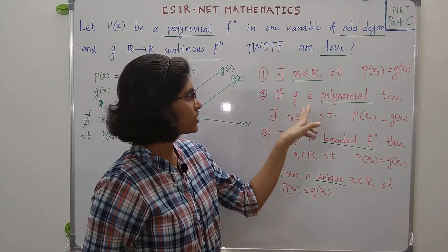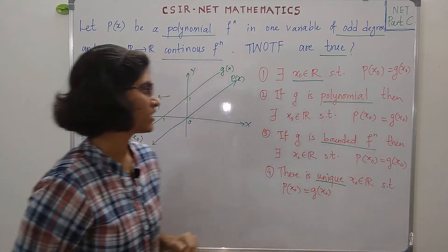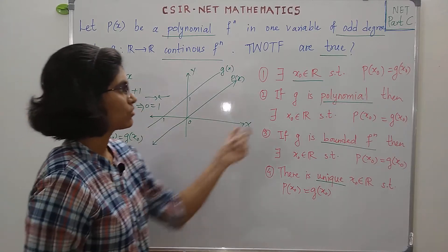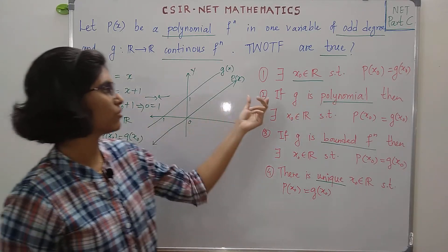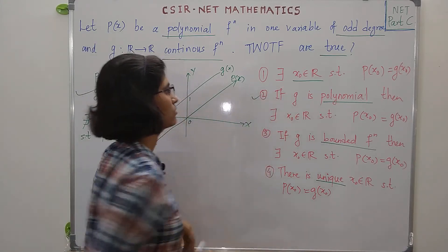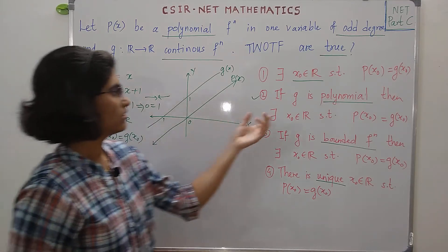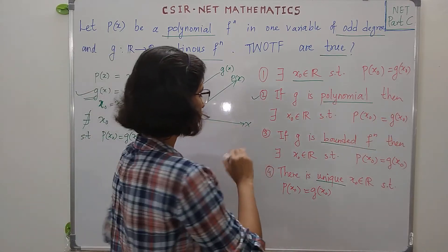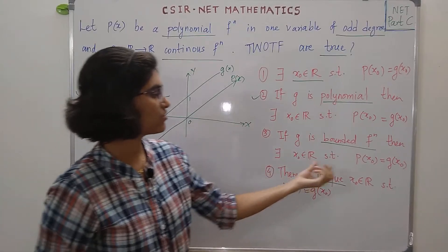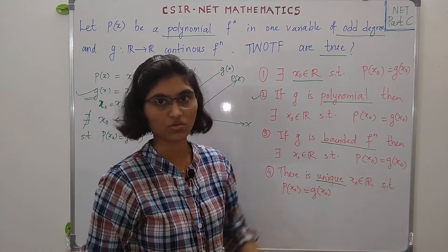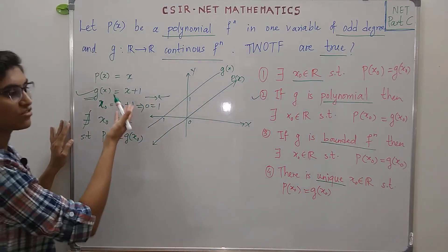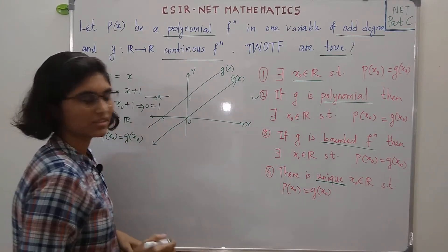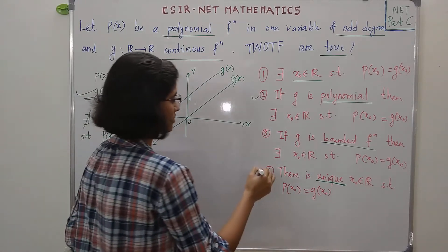The second option says G is a polynomial. Note that this G(x) = x + 1 is again a polynomial of degree 1, so the same counter-example also works for option 2 — P(X₀) is not equal to G(X₀) for any X₀ in R. The last option says there is a unique X₀, but since there does not even exist such X₀, the question of uniqueness does not arise. So option 4 is also not true.